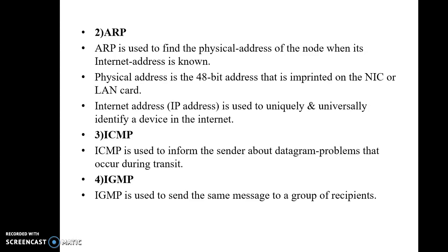ARP, Address Resolution Protocol, is used to find the physical address of a node when its internet address is known. The physical address is the 48-bit address imprinted on the NIC or LAN card, while the IP address uniquely and universally identifies a device on the internet. ICMP is used to inform the sender about datagram problems that occur during transit. IGMP is used to send the same message to a group of recipients.